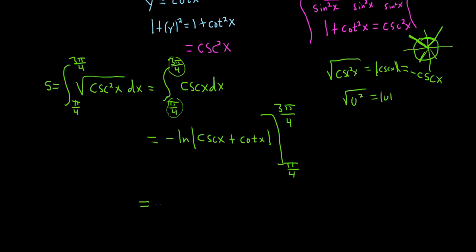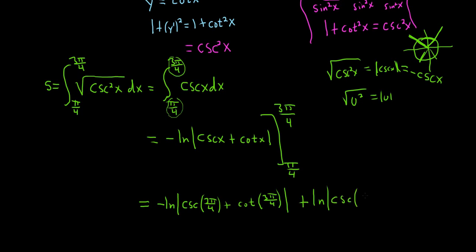Now we just have to evaluate. First we plug in 3 pi over 4: negative natural log, absolute value, of cosecant of 3 pi over 4 plus cotangent of 3 pi over 4. Then minus — but there's already a minus — so it's plus natural log, absolute value, of cosecant of pi over 4 plus cotangent of pi over 4.